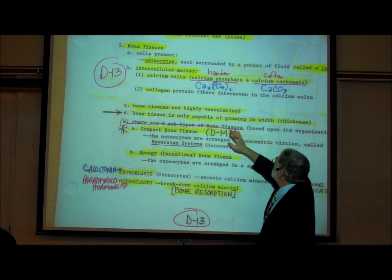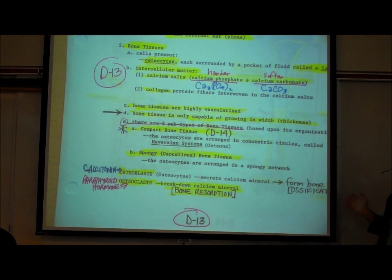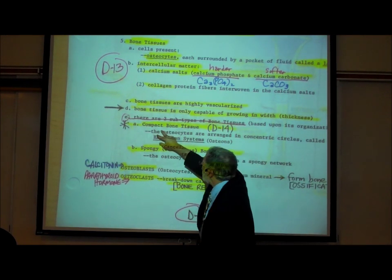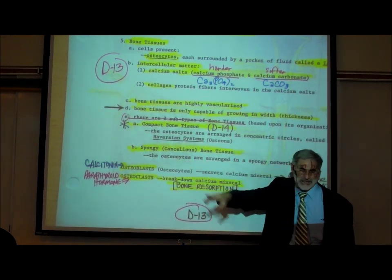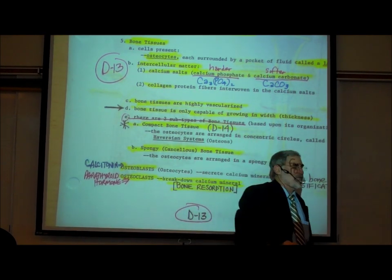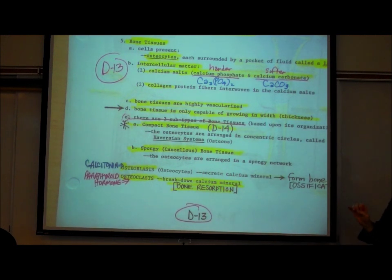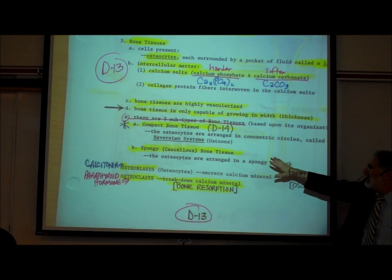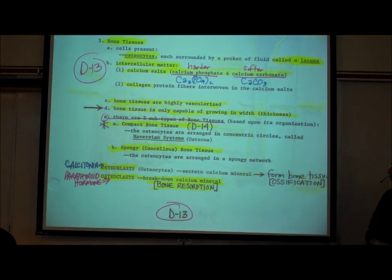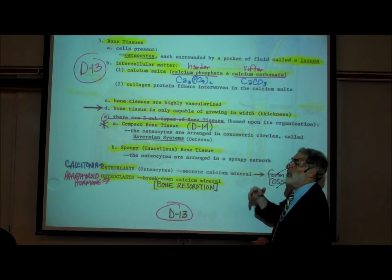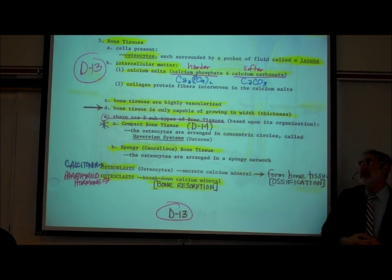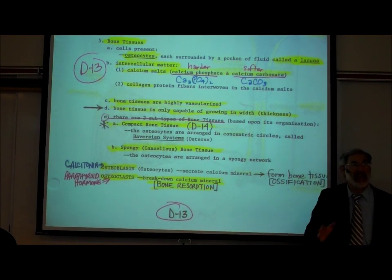On D13, item D, we wrote that bone tissue is only capable of growing in width — we'll come back to that in a few minutes. There are actually two types of bone tissue: compact bone tissue and spongy, also known as cancellous, bone tissue. You need to know about both, but only compact bone has an asterisk — that's the only one you need to recognize under a microscope.